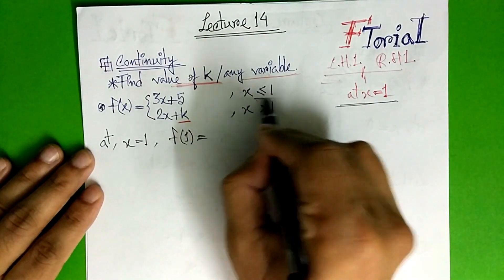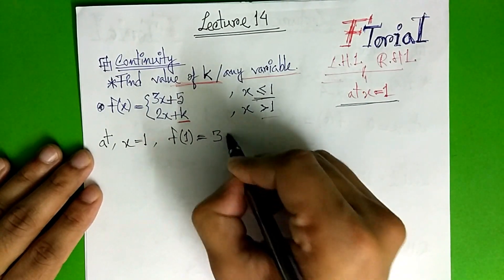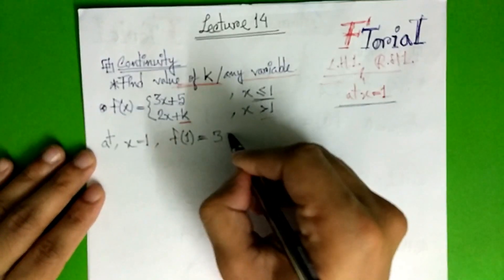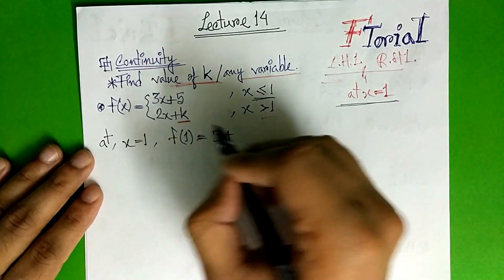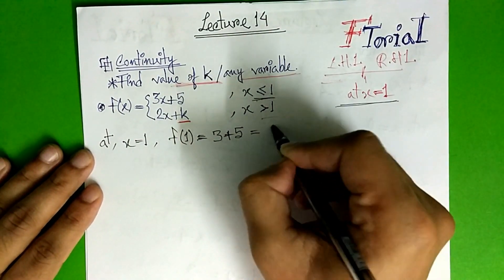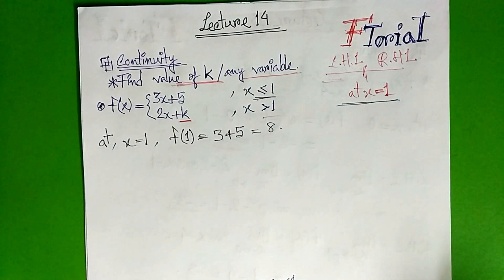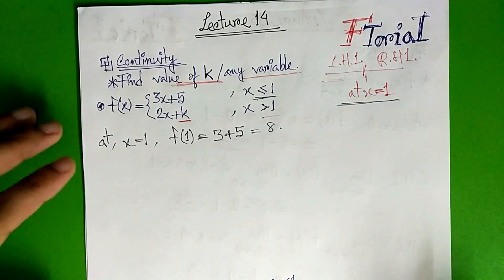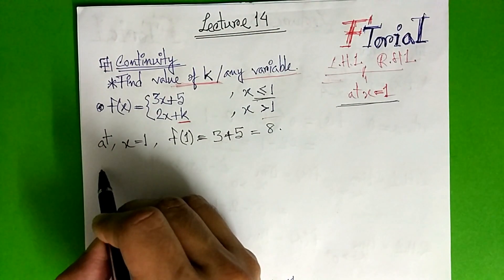So function at x equals 1 gives: 3 plus 1 equals 1 equals 3; and 1 into 3 equals 3 equals 5; so this is equal to 8. Then I will show the right hand limit and left hand limit. I will show the left hand limit.